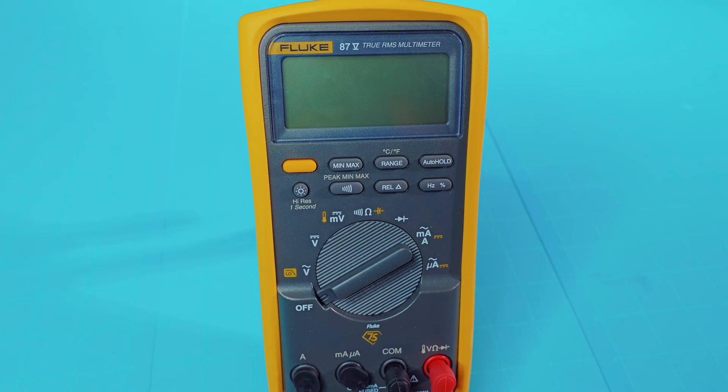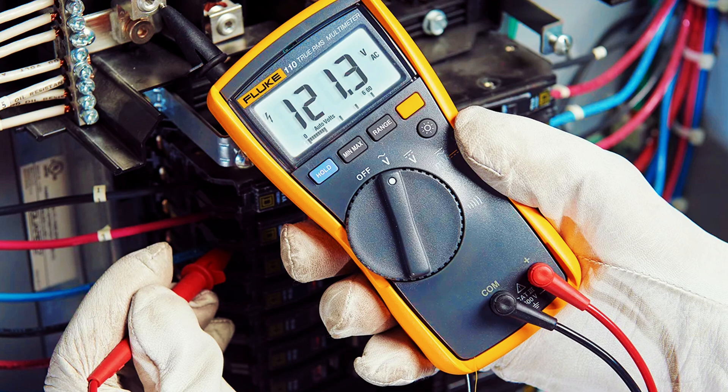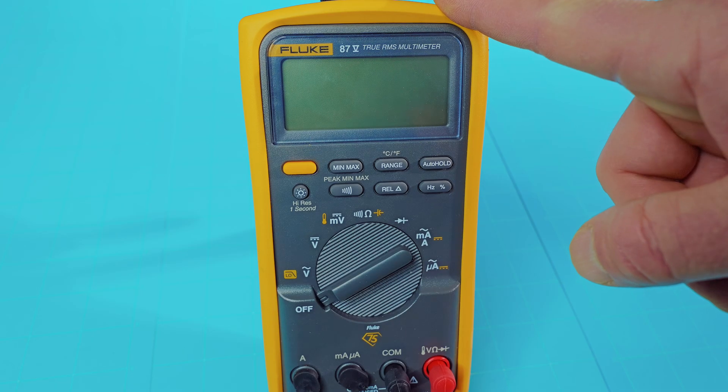Folks, last up is our biggest multimeter is the Fluke 87.5. Now, this is a pretty powerful multimeter, most used by professional electricians, but you may have one around your house. I just wanted to show that this will also test your LEDs as well.